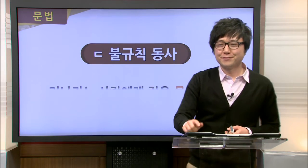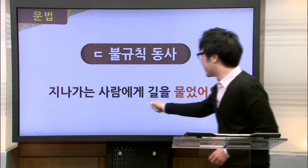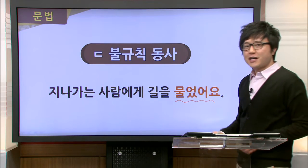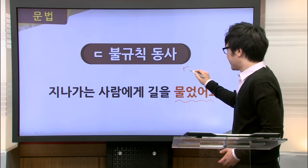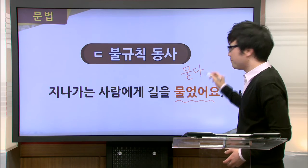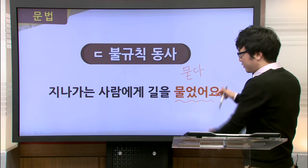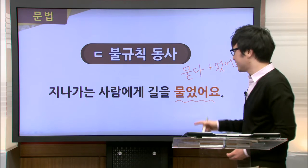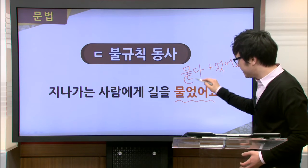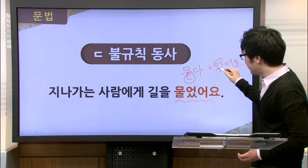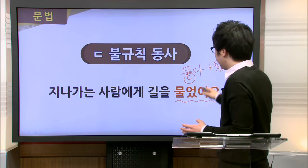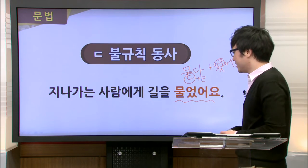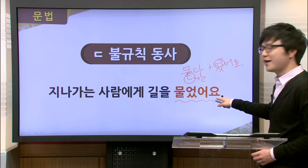Let's look at another example: 지나가는 사람에게 길을 물었어요. The focus here is 물었어요, whose basic form is 묻다 — meaning 'to ask' — which ends in ㄷ. This is formed by taking 묻다 and adding 었어요 to show past tense. The ㄷ is met by the vowel sound 어, so the ㄷ changes to ㄹ, resulting in 물었어요. Please repeat: 지나가는 사람에게 길을 물었어요.